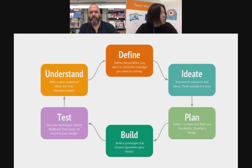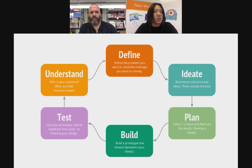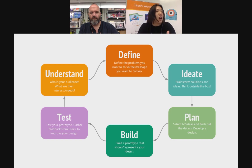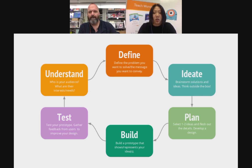The first phase of design thinking is understanding. What we mean is you want to think about who is your audience, what you're designing, and the problem you're trying to solve. Really think about your audience — what are their interests and what are their needs? The next stage is defining: once you've empathized with your audience, start defining the problem you want to solve or the message you want to convey.